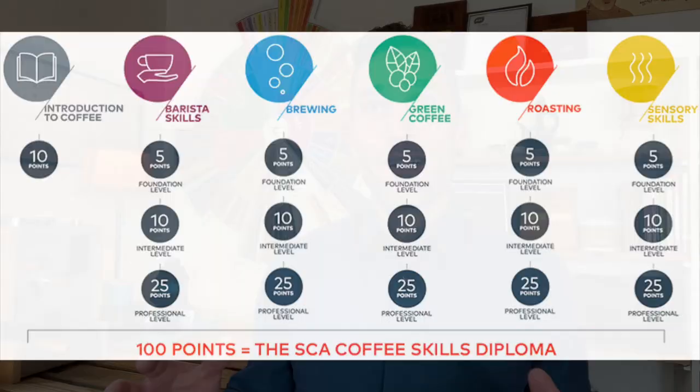That's big picture. The coffee skills program is what they call those courses. The SCA has other courses — sustainability, technical guilds — but the coffee skills programs are the classic SCA courses. You can get a coffee diploma by taking them, and you have to register with an AST in order to take these courses.